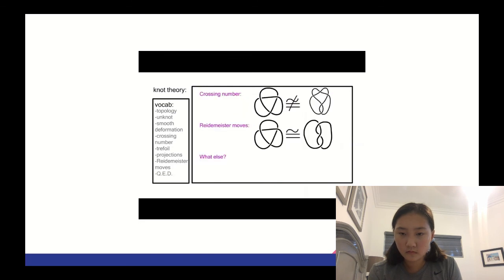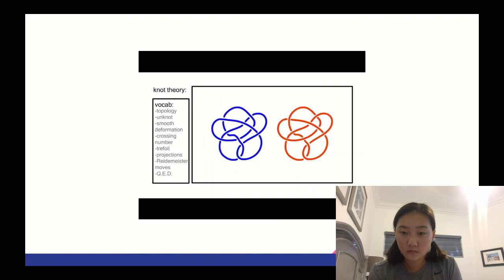While the crossing number and Reidemeister Moves can make basic distinctions, more complex knots require alternative methods. Methods that can prove this knot and this knot are not the same, even though they have the same crossing number.